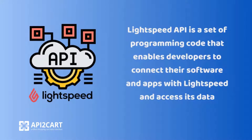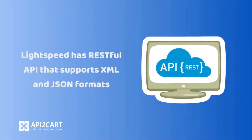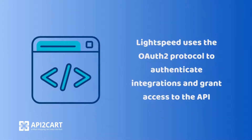Lightspeed API is a set of programming code that enables developers to connect their software and apps with Lightspeed and access its data. Lightspeed has a RESTful API that supports XML and JSON formats. Lightspeed uses the OAuth2 protocol to authenticate integrations and grant access to the API.